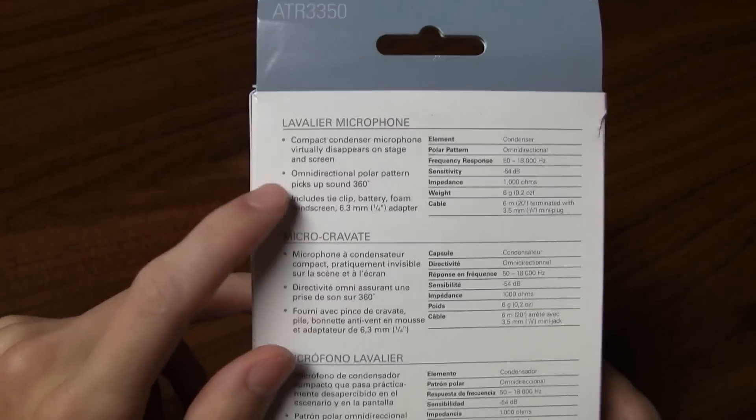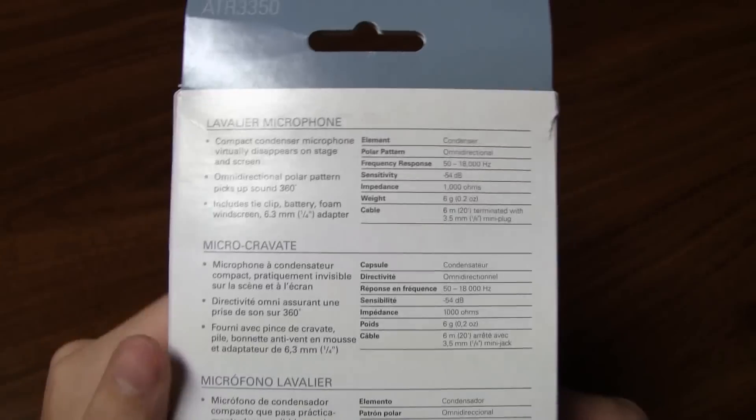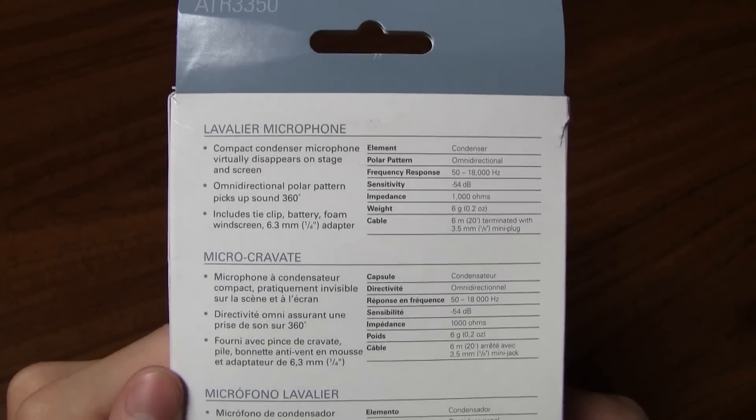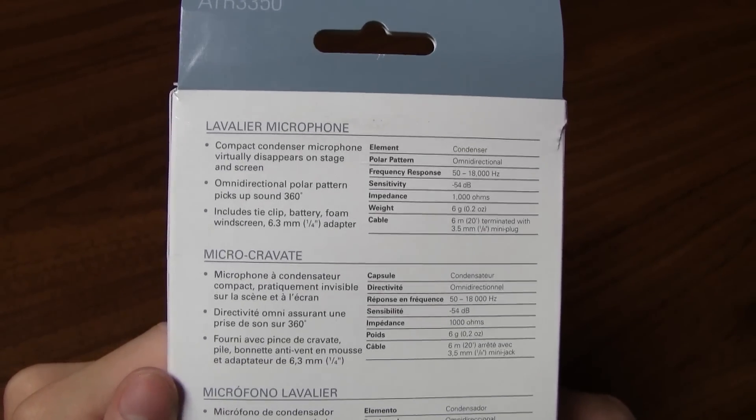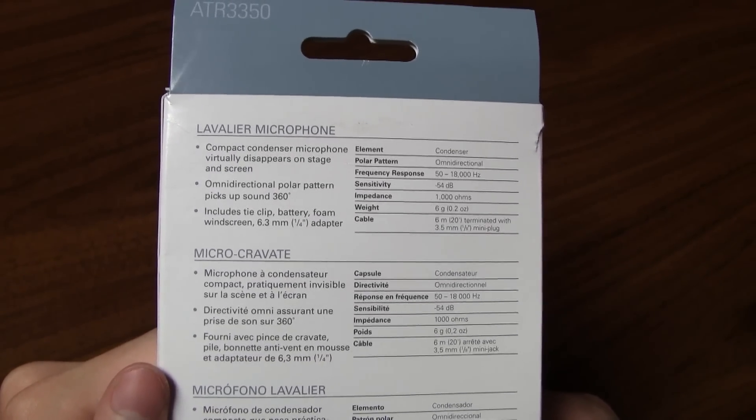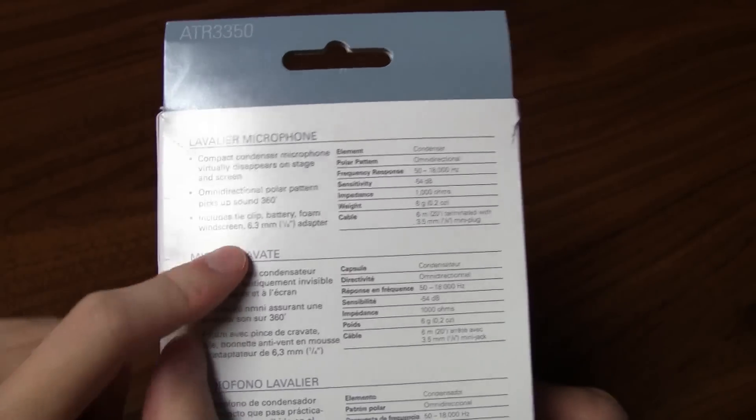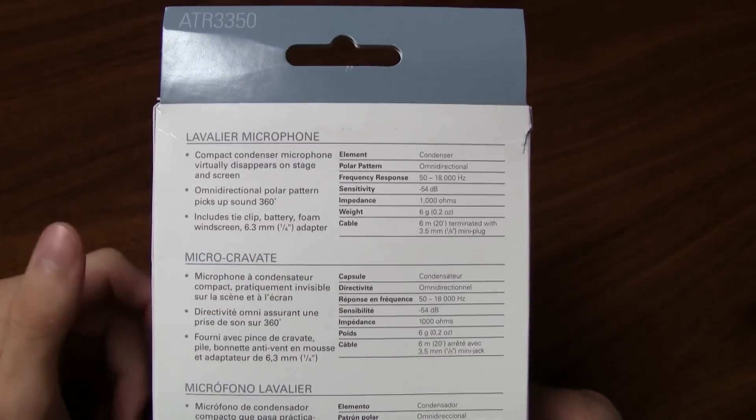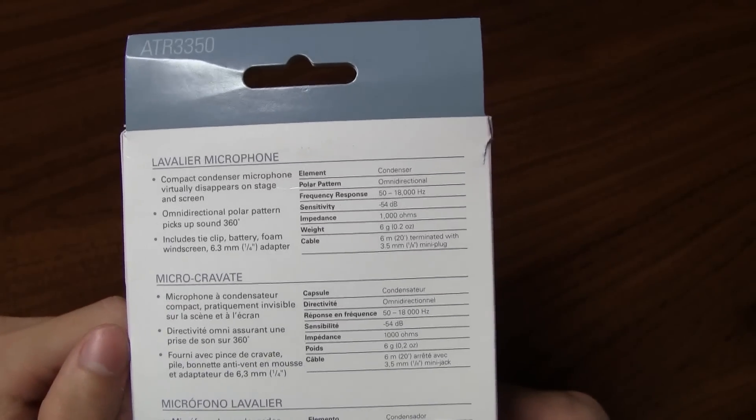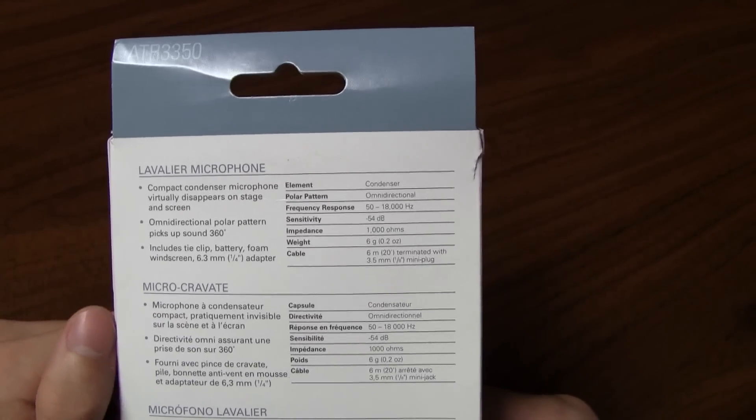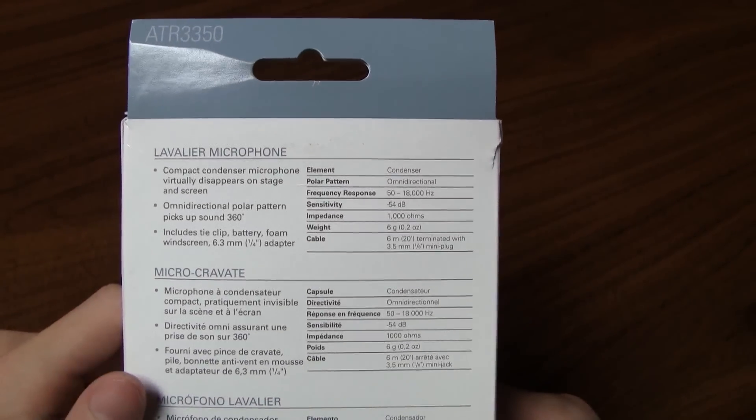If we flip over the back of the box, it states it right here. And it also states on the back of the box that it's compact and your microphone virtually disappears on stage and screen, which is excellent for YouTube videos. It also tells us what it includes in the box and how much it weighs. The Polar Pattern, which is omnidirectional, what kind of element microphone it is, condenser, and whatnot.